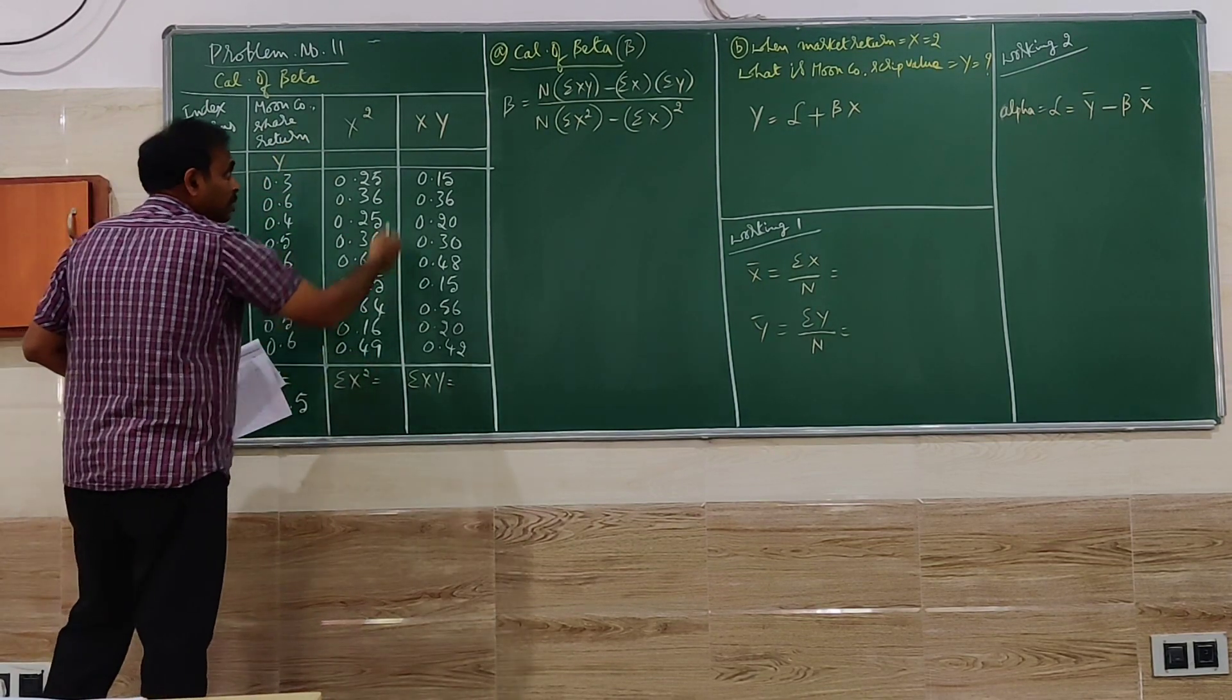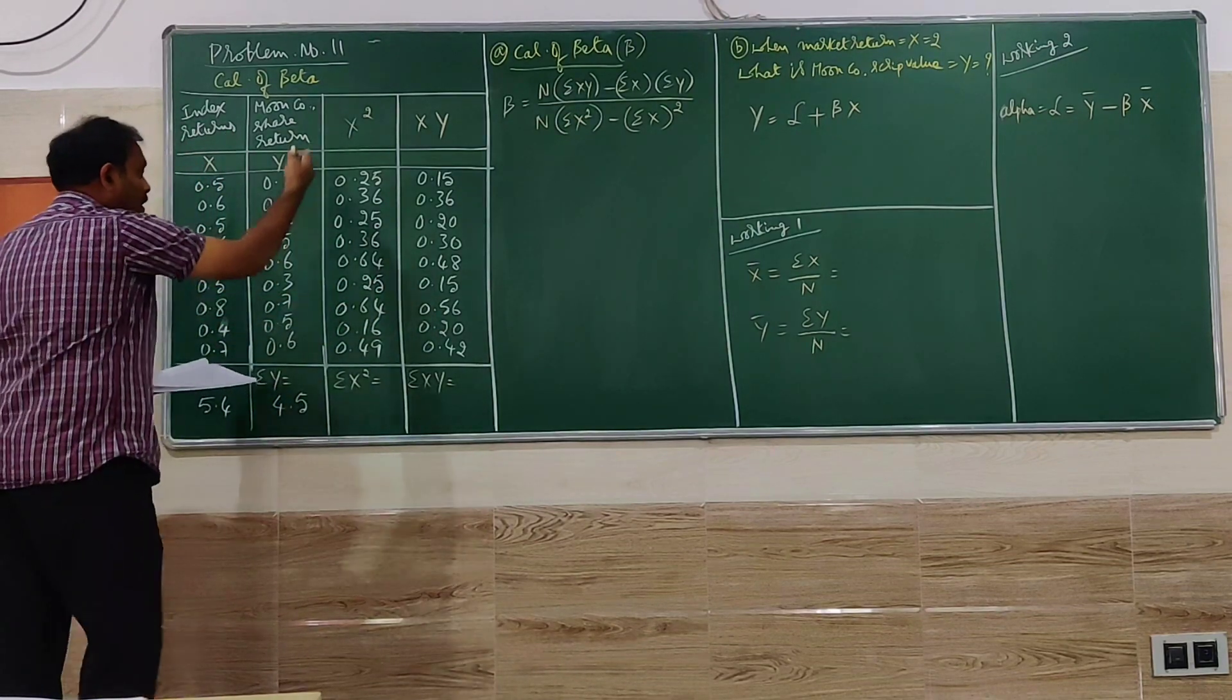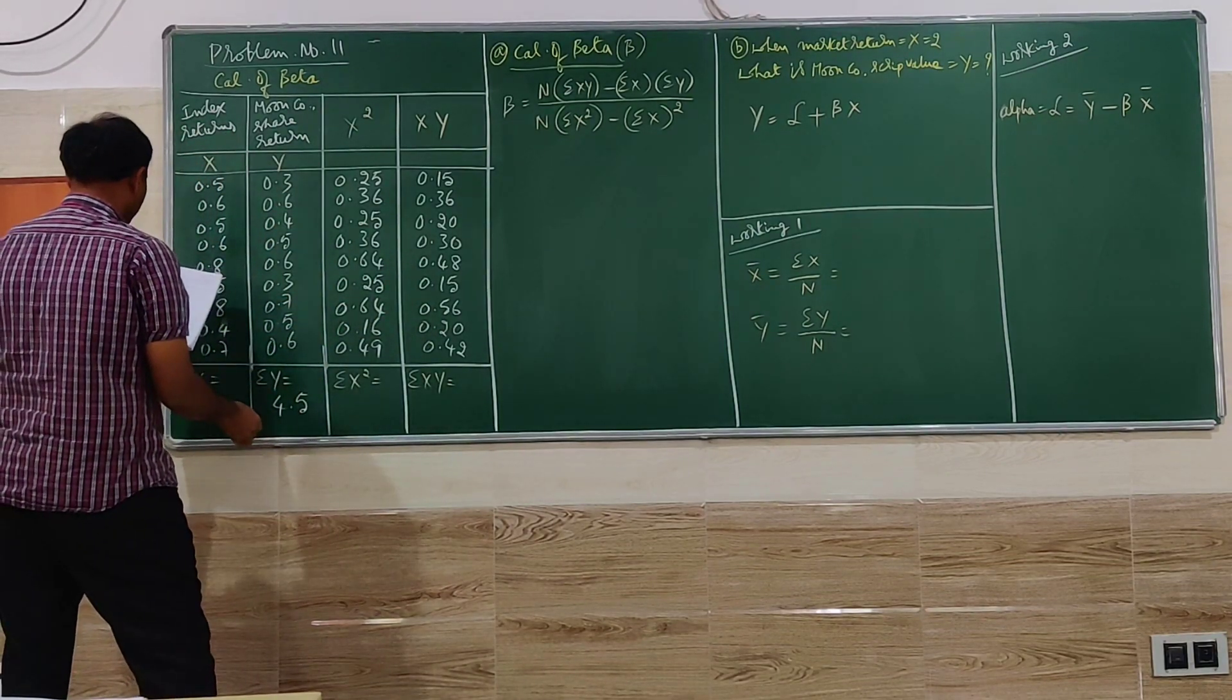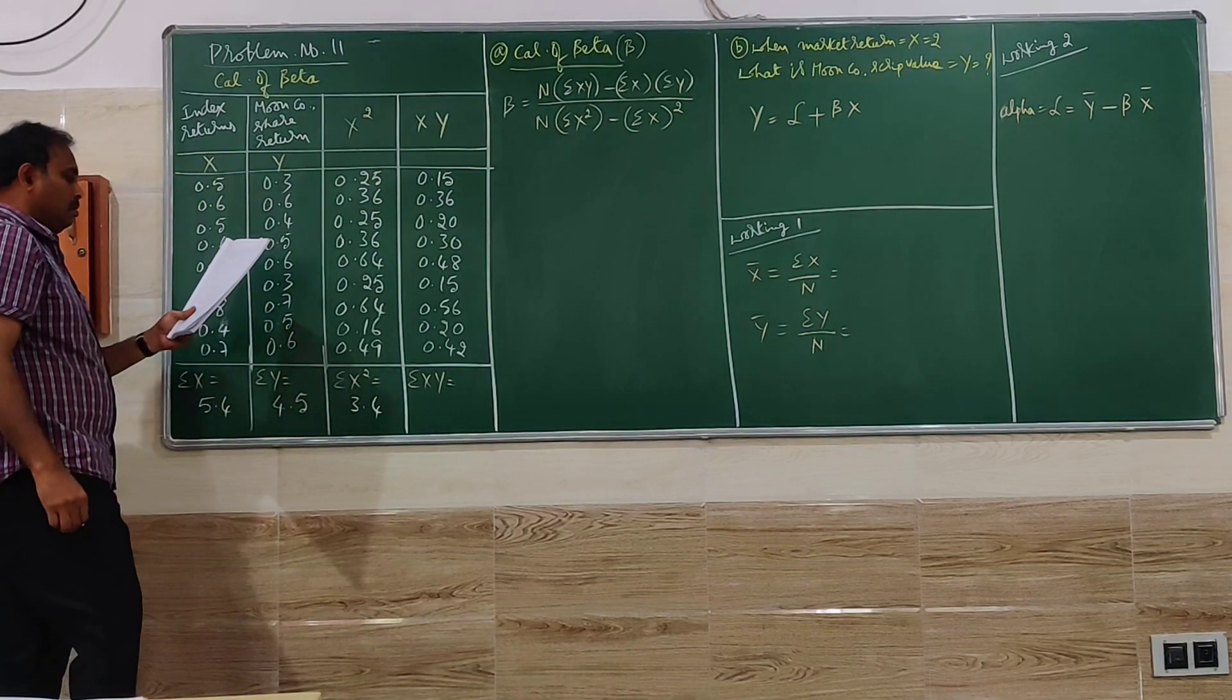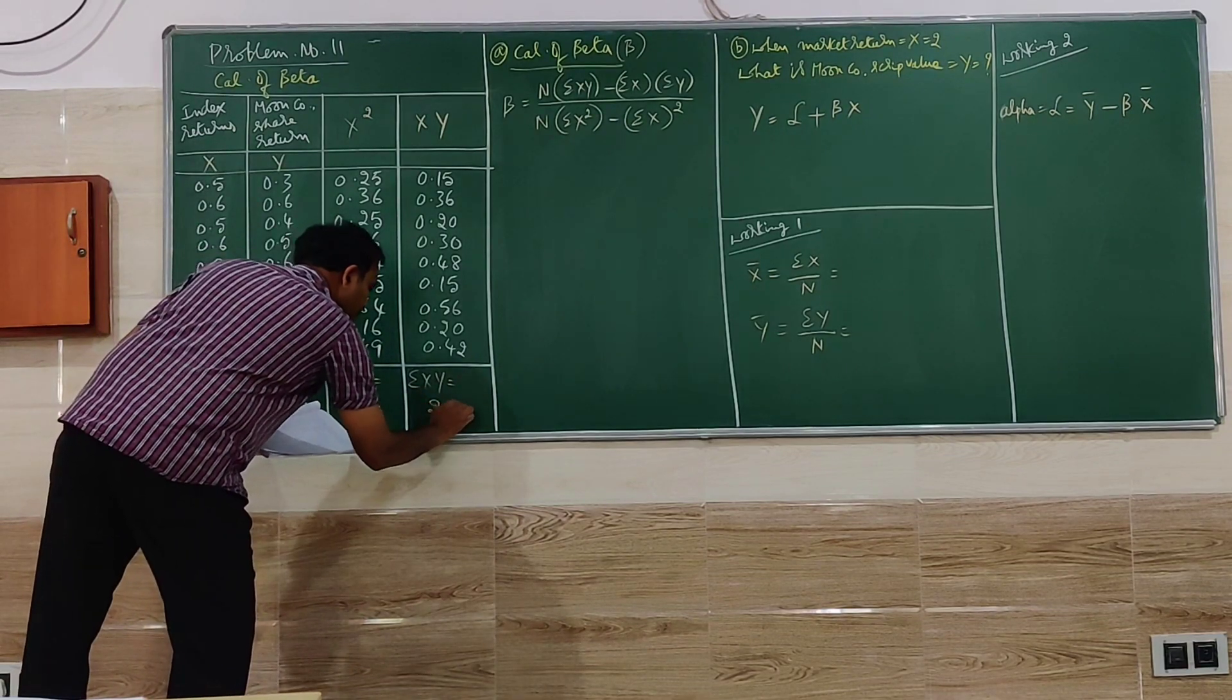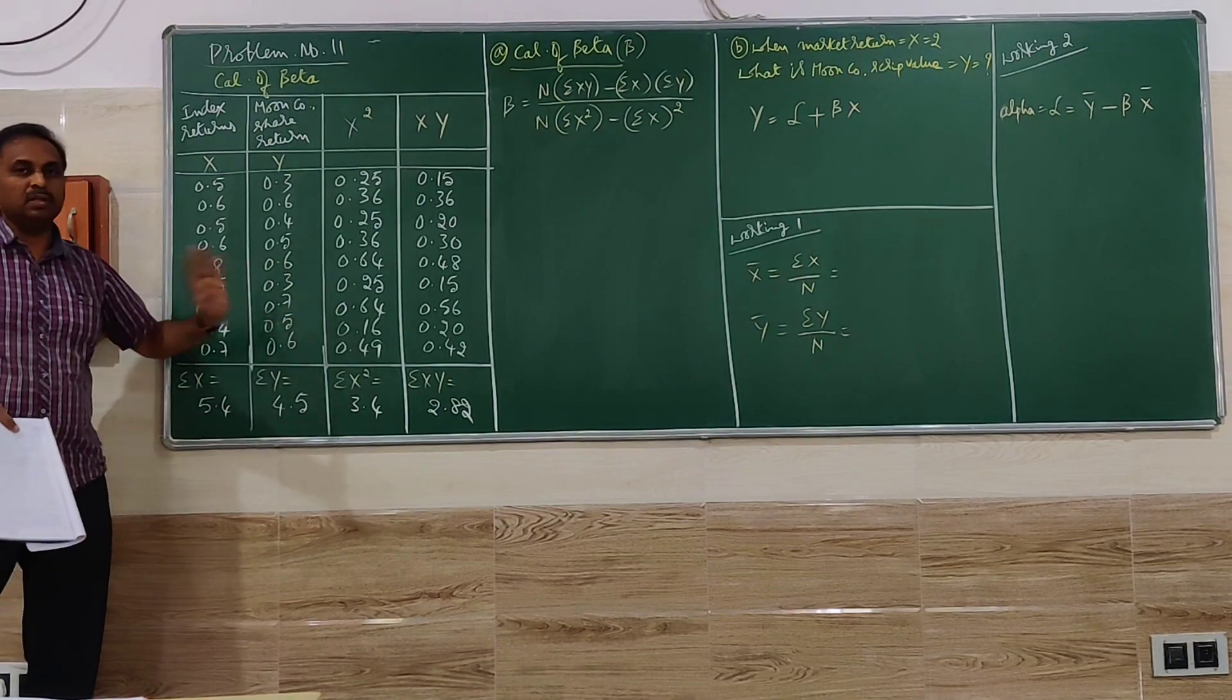Then total X square column as well as the XY column. Total of X square is 3.4. Total of XY is 2.82. So we have to total this.